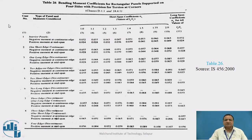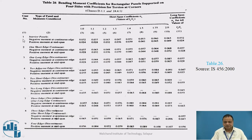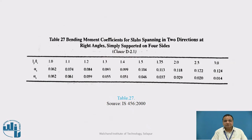Coefficients αx and αy are taken from table 26 and table 27 of IS 456-2000 depending upon the case. Table 26 is used for cases 1 to 9, giving coefficients for the Ly/Lx ratio ranging from 1 to 2 — both positive bending moment at mid-span and negative bending moment over supports. Table 27 is used for case 10 only, providing the corresponding αx and αy coefficients.